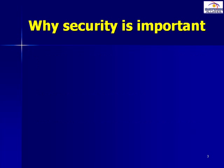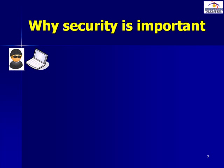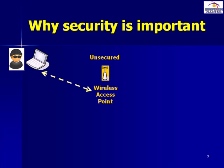So let's get started. If a hacker turns on a Wi-Fi enabled laptop in most areas today, what they'll find typically is an unsecured access point. This means that they are able to detect a connection to this wireless point and they know that it is unsecured and has no login or password required to make a connection. So they simply make a connection.